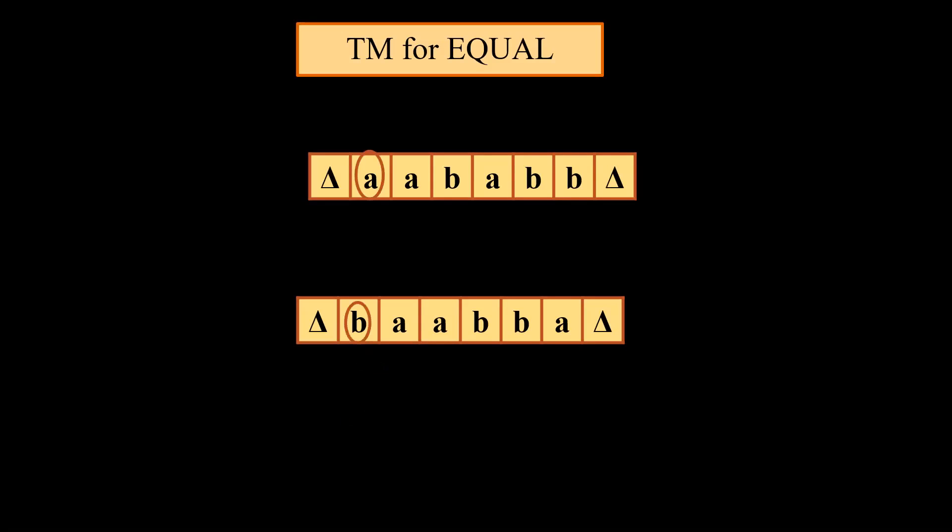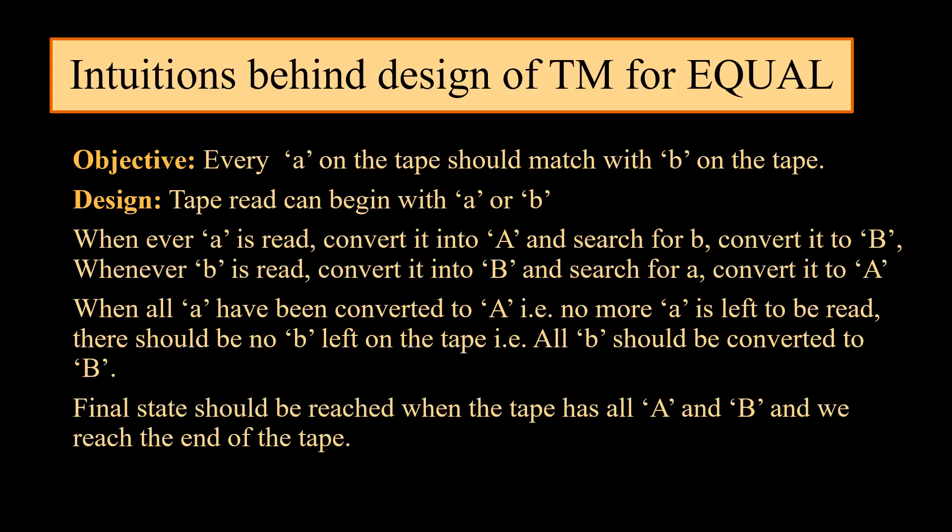The input can start with A or it can start with B. What we need to do is that whenever we come across A, we will try to find a B for that A. The reverse is also true — whenever we come across B we try to find A. Now what are the intuitions behind the design of this machine?